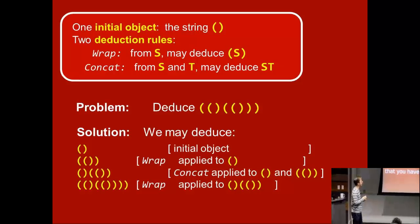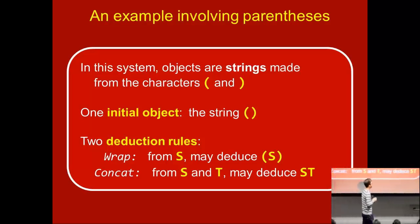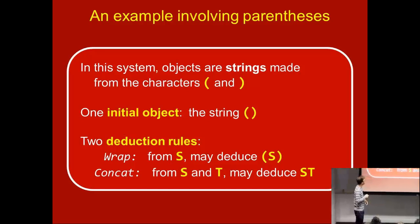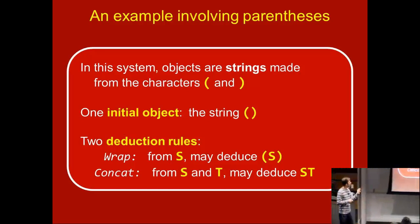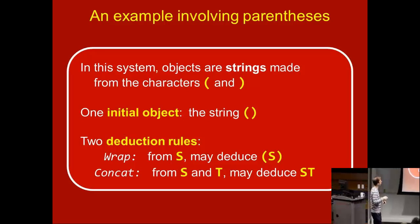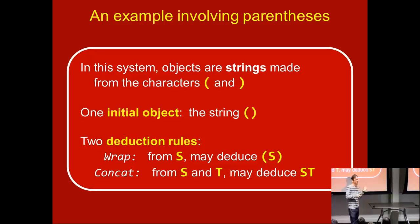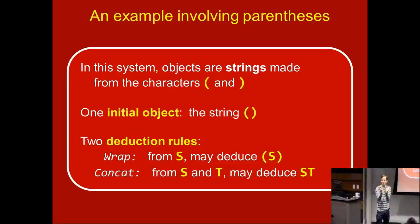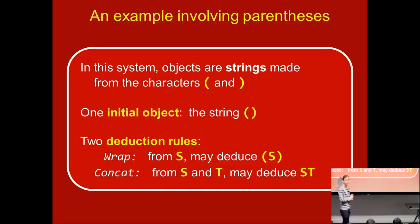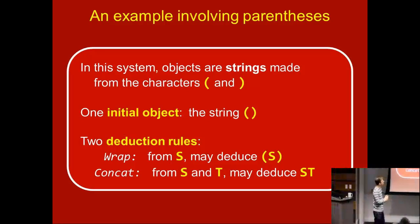Let's do another example involving parentheses. In this deductive system, the objects are strings made up of open and close parentheses. The initial object is the string open-close — a little pair of brackets. There are two deduction rules: 'wrap' says if you have a string s, you can stick an open and a close on the outside; and 'concat' says if you've deduced s and t, you can deduce s concatenated with t.